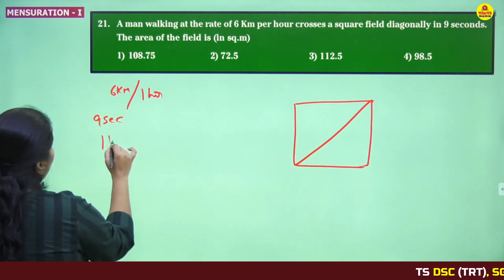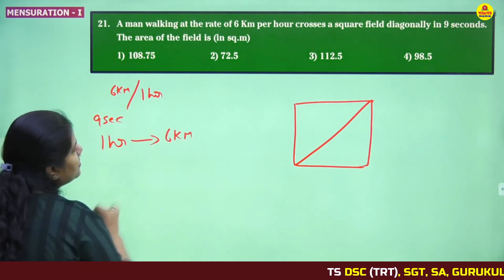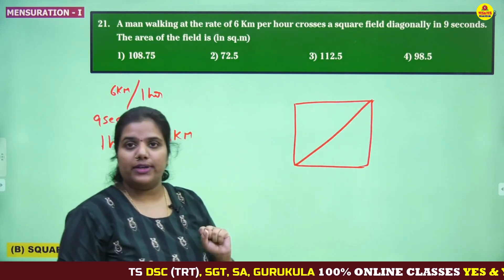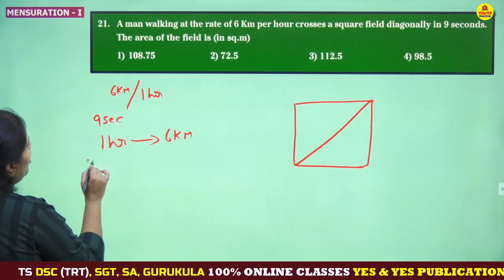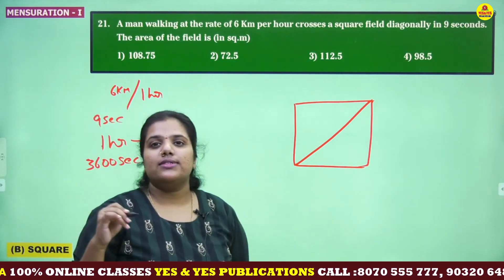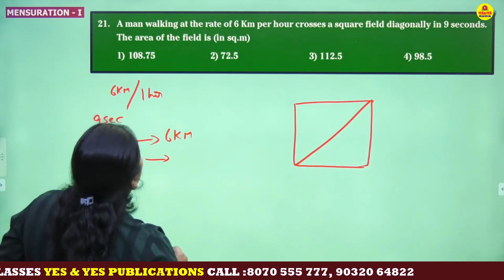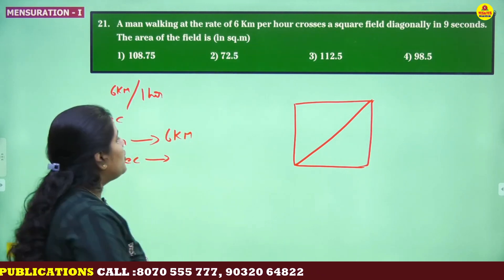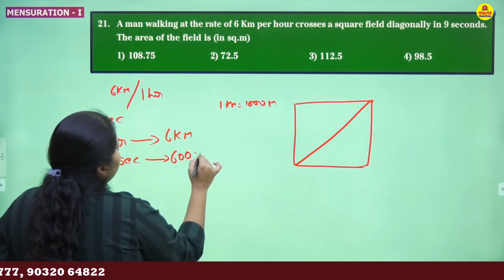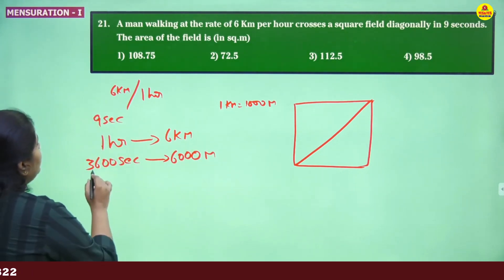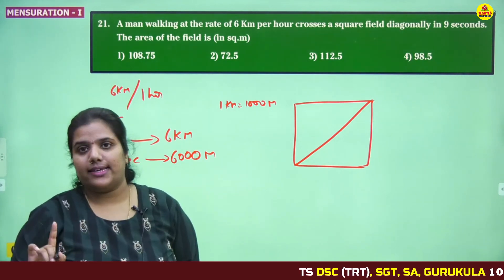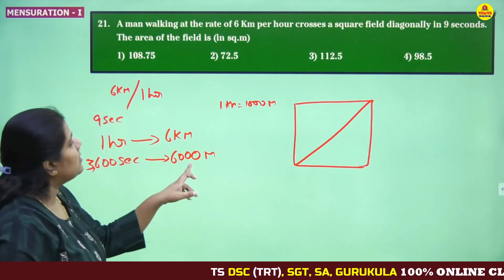In 1 hour, how many kilometers did he walk? 6 kilometers. The time is given in seconds — in 9 seconds he crosses the square field. So I am converting 1 hour into seconds, which equals 3600 seconds. So 3600 seconds implies 6 kilometers. Since the answer is needed in meters, 1 kilometer equals 1000 meters, so 6 kilometers equals 6000 meters. Therefore in 3600 seconds, he walked 6000 meters.